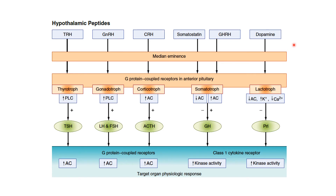This schematic diagram shows the hypothalamic peptides released into the median eminence, carried by the portal system to the pituitary gland, where they affect pituitary cells. Most peptide hormones act on surface receptors and bind with G-protein coupled receptors. These G-protein coupled receptors couple to enzymes within the membrane — either adenylyl cyclase or phospholipase C. Adenylyl cyclase leads to the formation of cyclic AMP, whereas phospholipase C causes formation of inositol triphosphate and diacylglycerol. This summarizes the mechanism of action of hypothalamic hormones at the anterior pituitary gland.